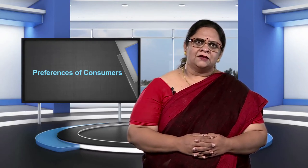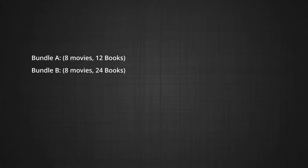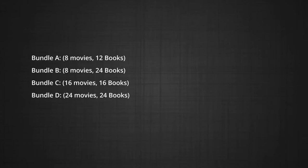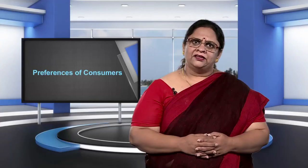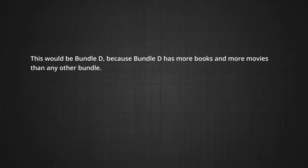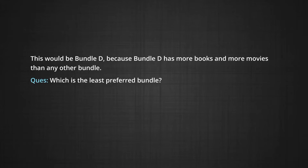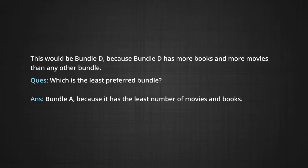Let us go back to the bundles of movies and books we were examining in the module on budget constraints. Bundle A contains 8 movies and 12 books. Bundle B contains 8 movies and 24 books. Bundle C has 16 movies and 16 books. And bundle D has 24 movies and 24 books. Bundle B has more books and the same number of movies as bundle A, so naturally I choose bundle B over bundle A. Clearly, bundle D is the most preferred because it has more books and more movies than any other bundle, while bundle A is least preferred because it has the fewest movies and books.